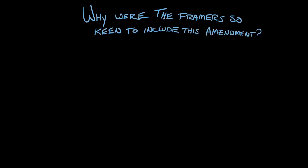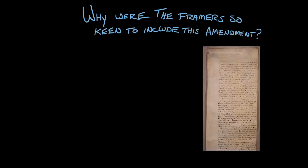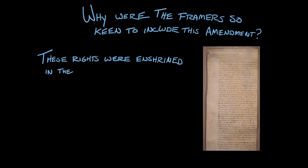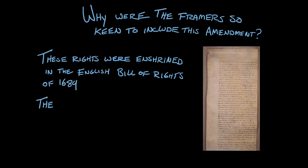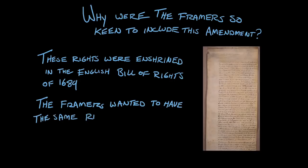Well, these rights were actually enshrined in the English Bill of Rights of 1689. And so when the Americans got into the dispute with Great Britain, they decided they wanted to have the same rights that Englishmen had. So it was not too surprising that when George Mason actually wrote the Virginia Declaration of Rights in 1776, he looked to English law to see what rights the English had. And so these 16 words in the Eighth Amendment have been subject to a lot of controversy over the years.